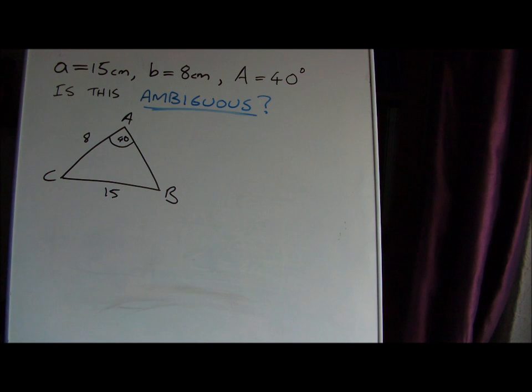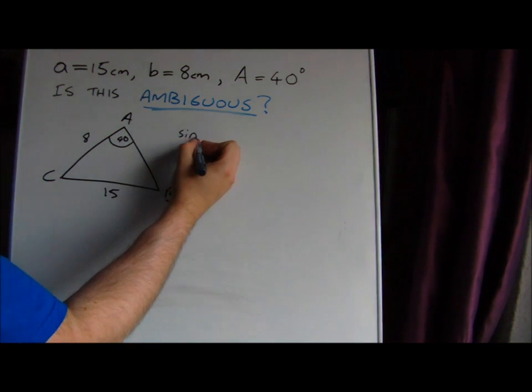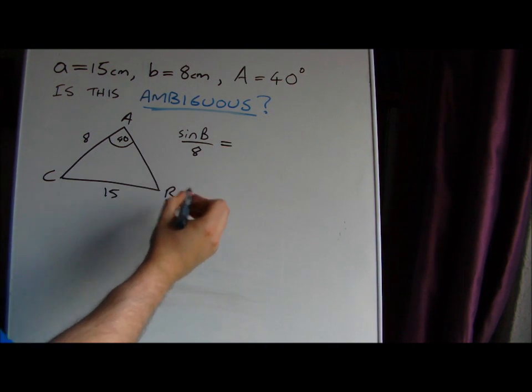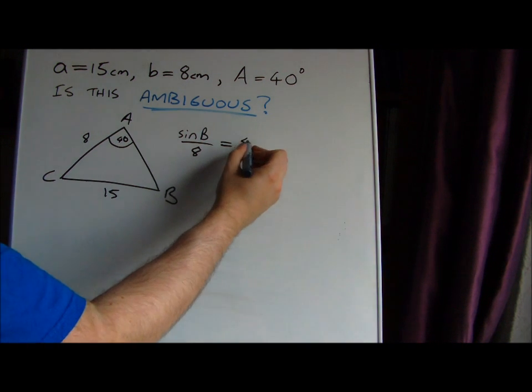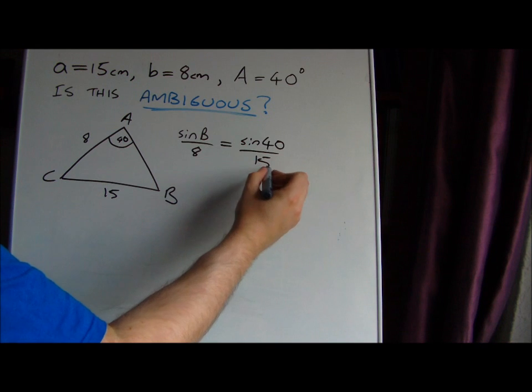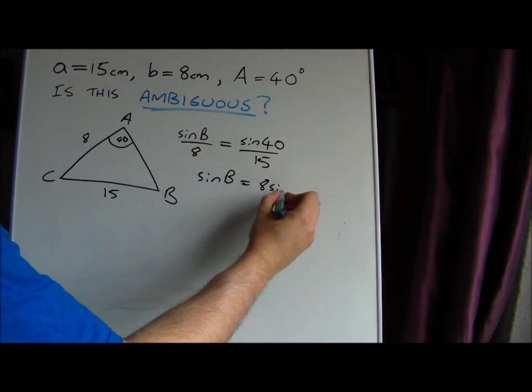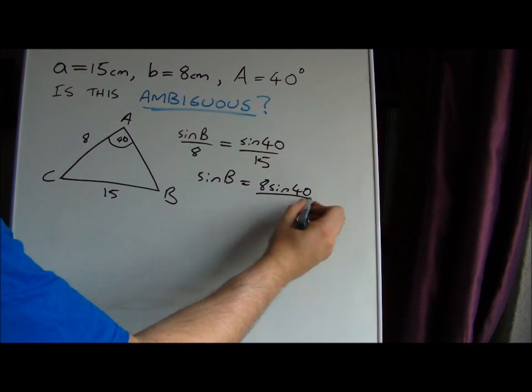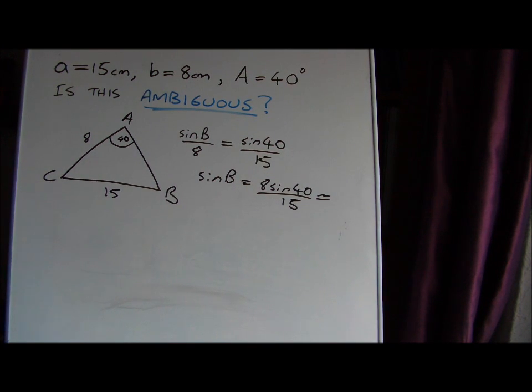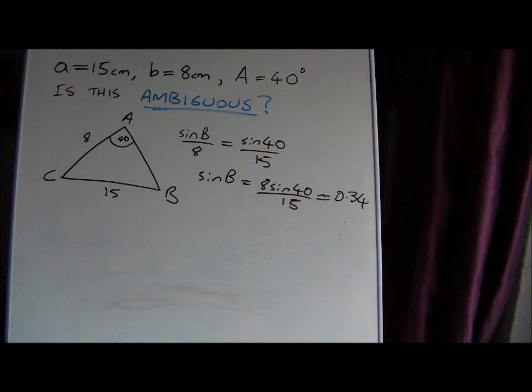So we'll write down the sine rule to find angle B. Sine B over the opposite side, which is 8, equals sine 40 over 15. Rearrange that to get sine B, which is going to be 8 sine 40 over 15. Your calculator will tell you that's approximately equal to about 0.34.